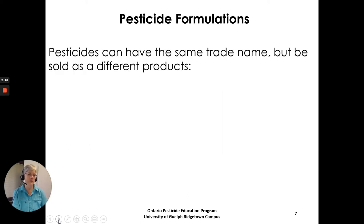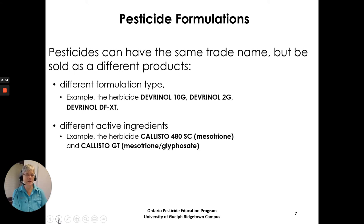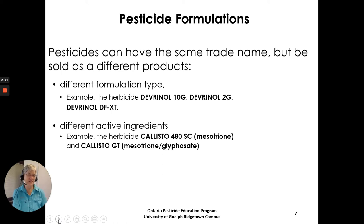Pesticides can have the same trade name but be sold as different products with different formulation types. For example, the herbicide Devranol 10G, Devranol 2G, or Devranol DFXT all indicate different formulation types and different active ingredients. Similarly, Callistyl 480 SC has one active ingredient while Callistyl GT has two active ingredients — the GT in the name gives you that clue. Look closely so you know what you're dealing with.